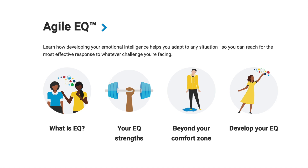Agile EQ is a solution from Everything DiSC that will help you improve your emotional intelligence. You can use this either on your team or in your organization. The training will help learners become more agile behaviorally as they navigate social and emotional situations by improving their emotional intelligence. In this video, I will briefly give a tour of Catalyst, and I'll show you how you can use this tool to either coach or teach emotional intelligence and agility.